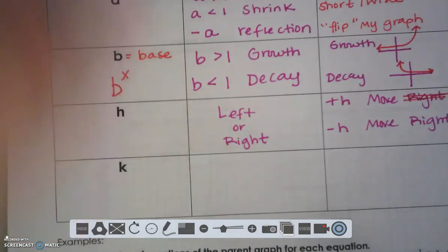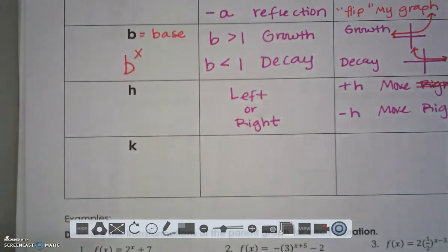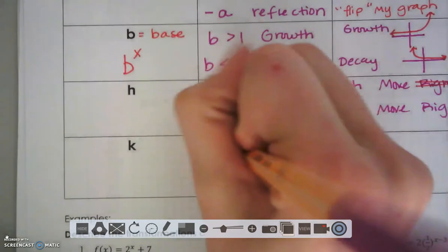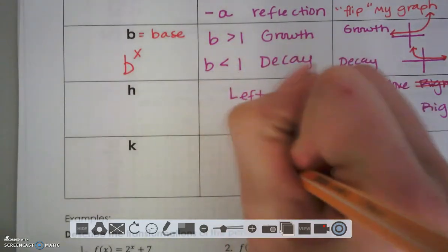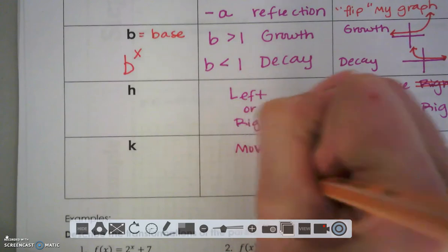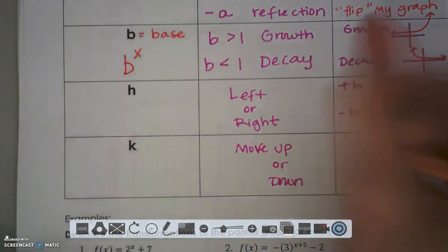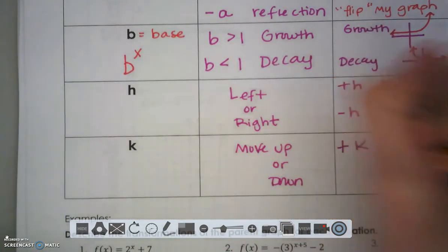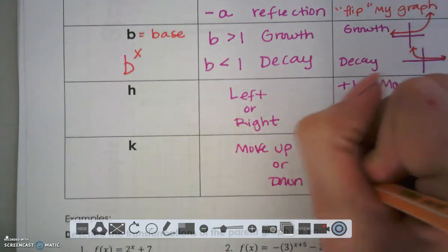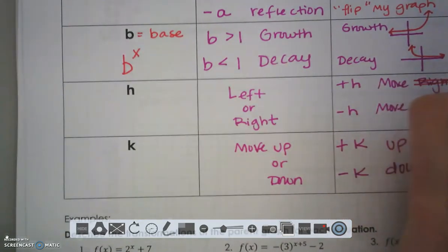Your K value is still a vertical motion. You could be moving up or down. If it's a positive K value, you're still going up. And if it's a negative K value, you're still going down.